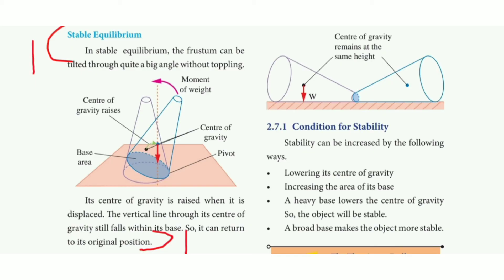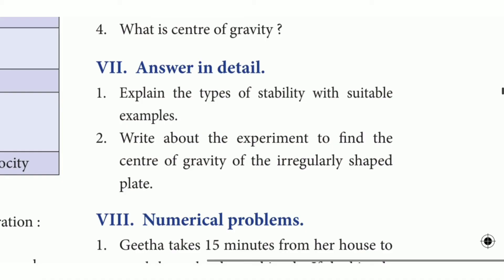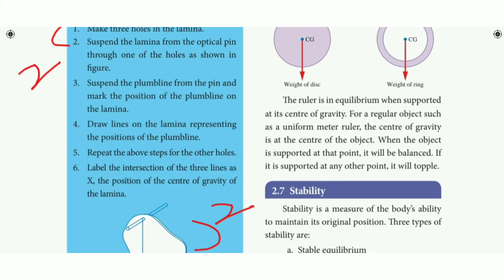Page 24 contains the types of stability — stable equilibrium, unstable equilibrium, and neutral equilibrium — along with their explanations and diagrams. This is the answer in detail for the first question. Second question: Write about the experiment to find the center of gravity of an irregular shape plate. The answer is on page 23, in the blue color experiment box — make three holes in the lamina at points P, Q, and R, then refer to the diagram.